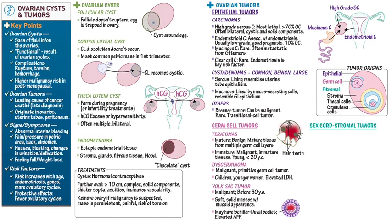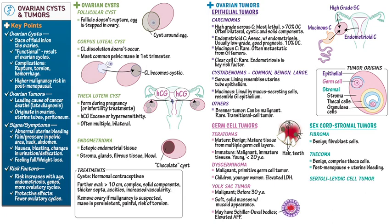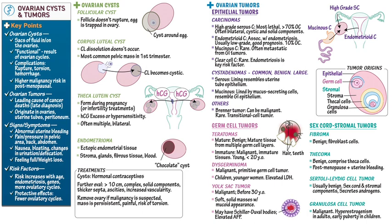Patients with yolk sac tumors may also have elevated alpha-fetoprotein levels. Key sex cord stromal tumors include fibromas, which are benign tumors comprised of fibroblasts; thecomas, which are benign tumors comprised of theca cells and are often estrogenic, most commonly diagnosed in peri- or postmenopausal patients presenting with uterine bleeding; and Sertoli-Leydig cell tumors, which are usually benign with sex cord and stromal components that secrete androgens. Granulosa cell tumors are malignant tumors that often present with hyperestrogenism in adults or early puberty in children. Ovarian cancer is treated surgically and with chemotherapy, though recurrence is common in patients with advanced stage cancers.